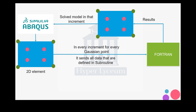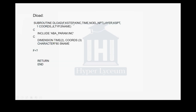In Abacus, each model contains elements. For a 2D element with four integration points and four nodes, Abacus sends data for each integration point at each step and increment time. The Fortran code receives this data, processes it, and sends the result back to that exact integration point. After completing this loop for all elements, it can solve the model for that increment.